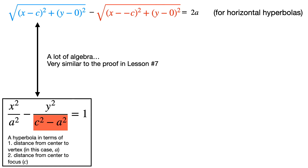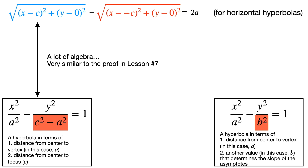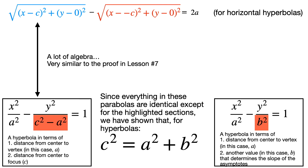This is a hyperbola that uses a and c — the distance from the center to the vertex and the distance from the center to the focus — to define a hyperbola. We also have a definition that relies on a and b, where b is the other value that determines the slope of the asymptotes. Because these refer to the same hyperbola, our conjecture was correct: c squared minus a squared equals b squared, and therefore c squared equals a squared plus b squared.